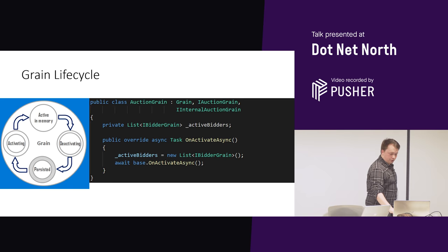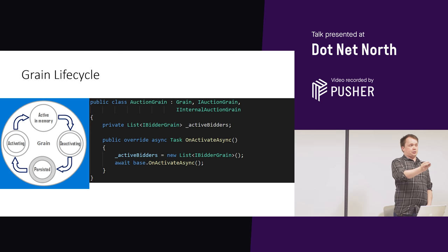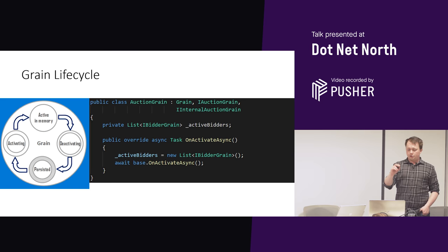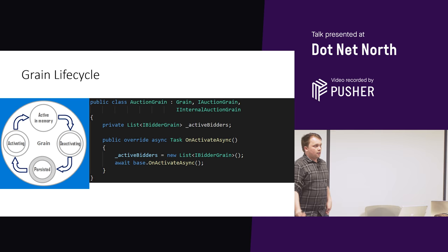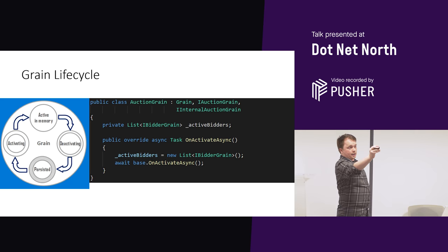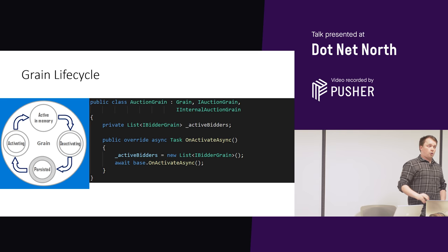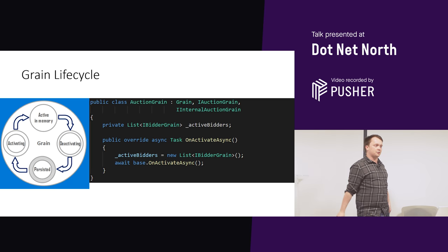So we're going to look at the grain lifecycle. We've already mentioned activating and deactivating. When my bidder grain says to the auction grain get me an auction grain, Orleans spins up an auction grain and says: well I need to activate it, I need to set up things it needs. You can use a constructor in a grain, but the more typical thing is to override OnActivateAsync from the grain base class and set up your new list of active bidders. This will always call — if this fails, your grain will not be usable.